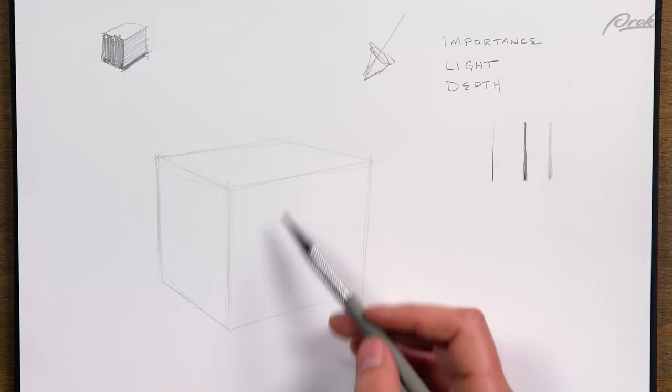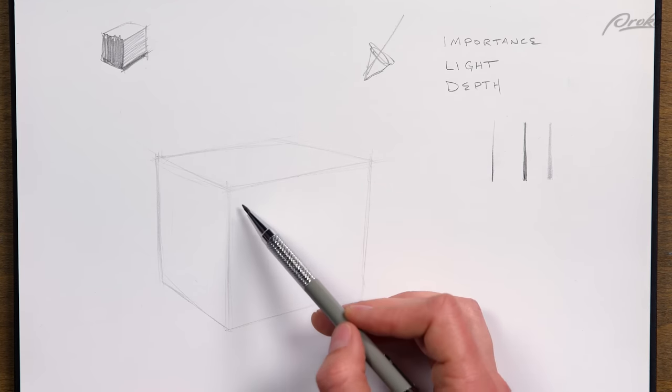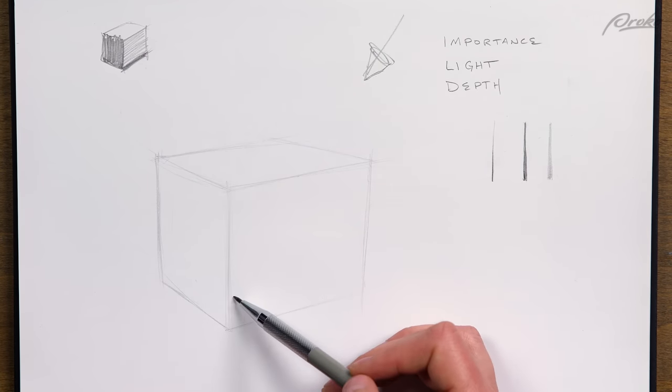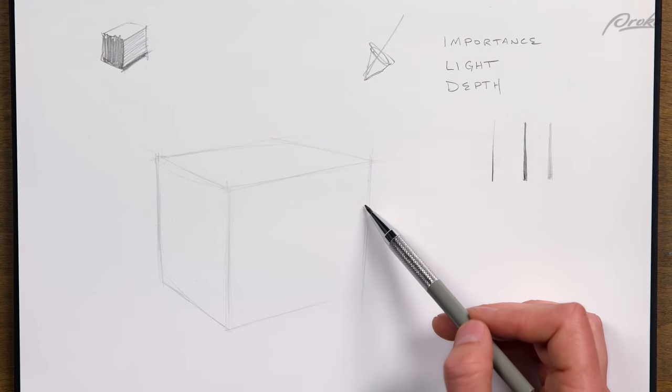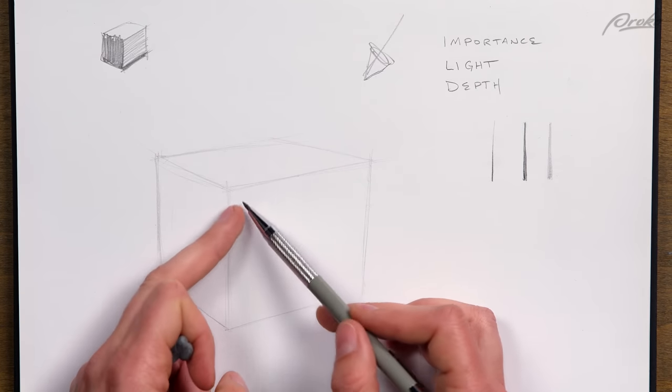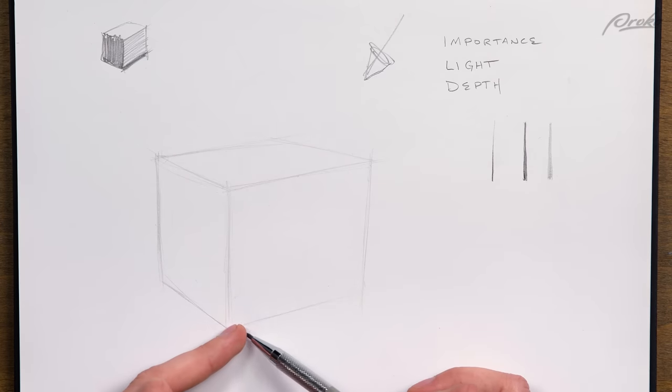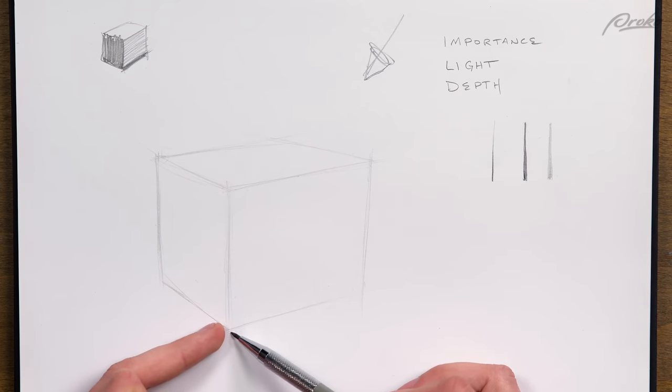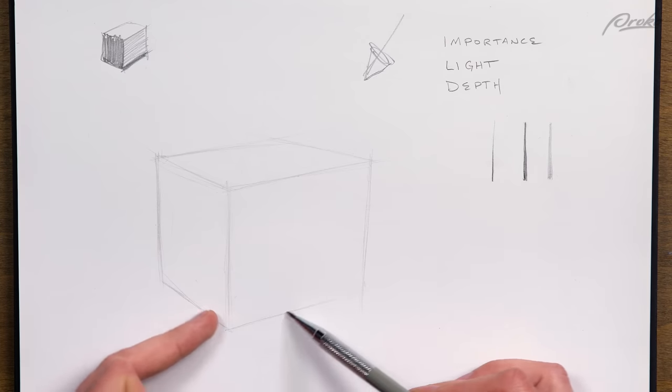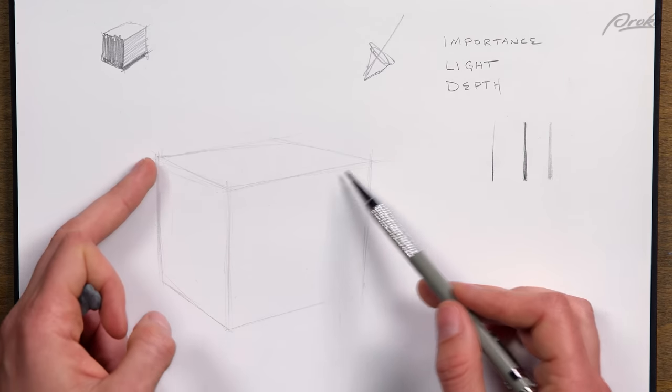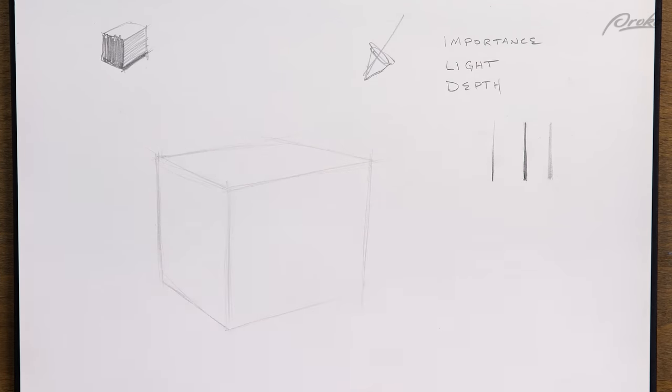For the depth, these lines back here are the farthest, this is the closest. And then these points are kind of in the middle. The lines that are going away this way are gonna taper so they start really close and then as they go away, they'll get thinner, thinner and then even here, even thinner. This is gonna be the thinnest part.